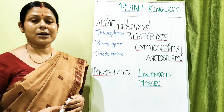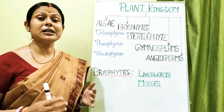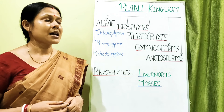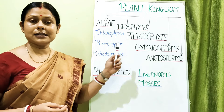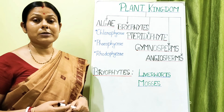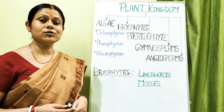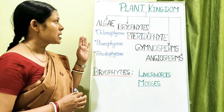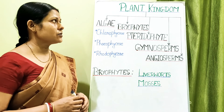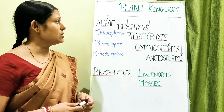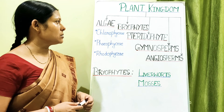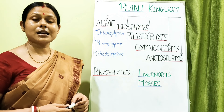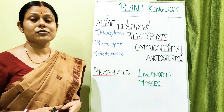In gymnosperms the seed is naked, while in angiosperms it is enclosed within the ovary. Those are the various divisions belonging to the plant kingdom. Algae are multicellular, chlorophyllous organisms, and depending upon their pigments, algae are divided into three different classes.